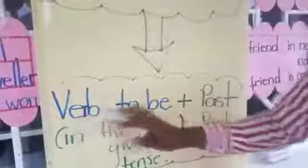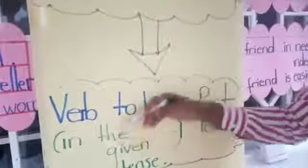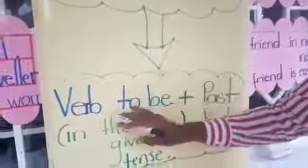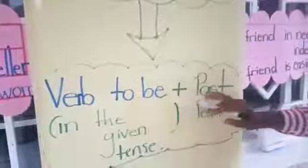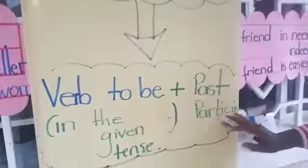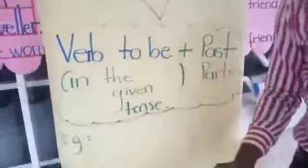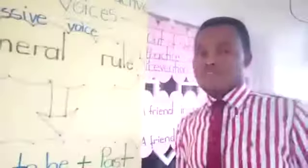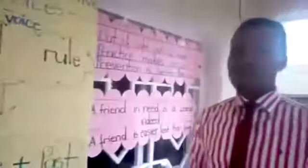The verb to be is the one which is conjugated in the tense given in active voice, then you add the past participle of the given verb. For example, you can say: 'Tom is playing football.' In passive voice: 'Football is being played by Tom.'